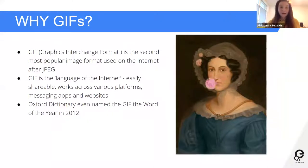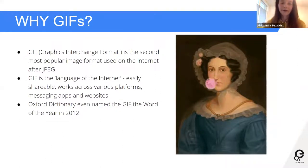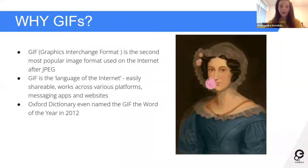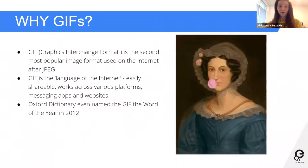So why GIF? GIF is the second most popular image format on the internet after JPEG. In a way it's the language of the internet — it's a way for people of different languages to communicate together visually. It's very easily shareable because it's light, it works across various platforms and messaging apps and websites, which is quite important because a lot of communication now goes on through WhatsApp, Telegram, and stickers on Instagram — GIFs are used for all these things.